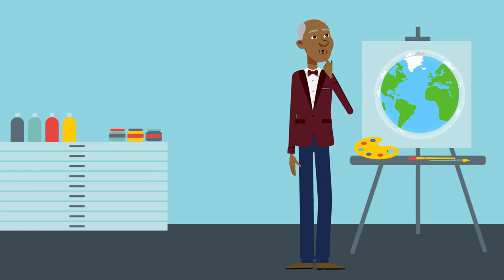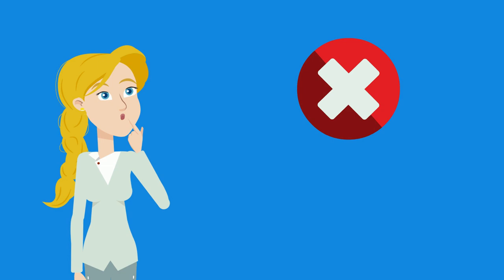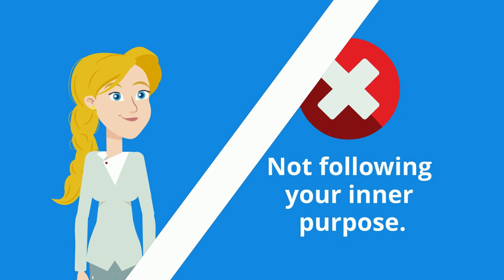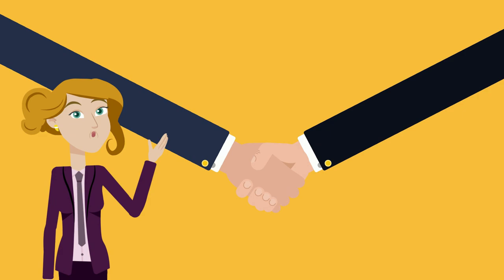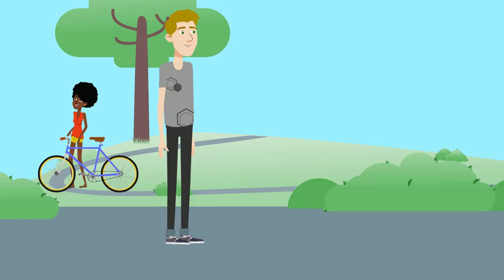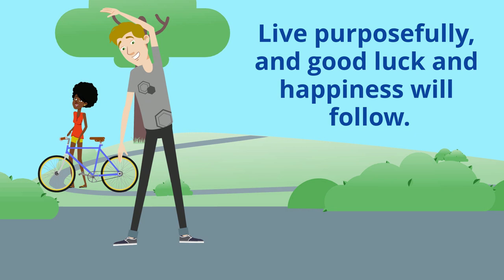On top of that, it gets even better. Once you start living meaningfully, the universe will make everything else happen for you. Haven't you noticed how people who seem to be the most fulfilled are also extremely lucky? It's like everything is working in their favor. Well, maybe it is like that. Live purposefully and good luck and happiness will follow. It's just an unwritten rule of life. Unfortunately, there's no amount of money in the world that can fix this rule if you don't follow all the steps.